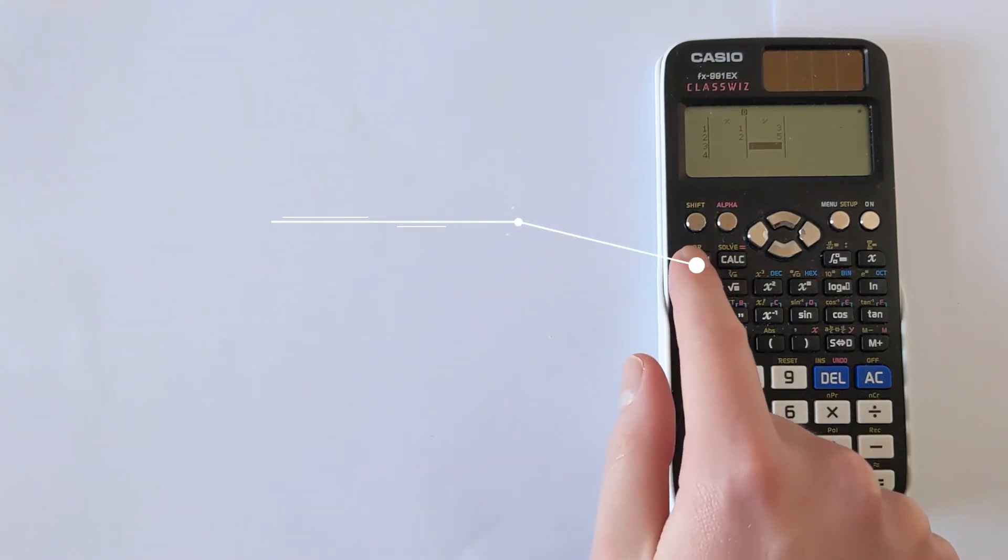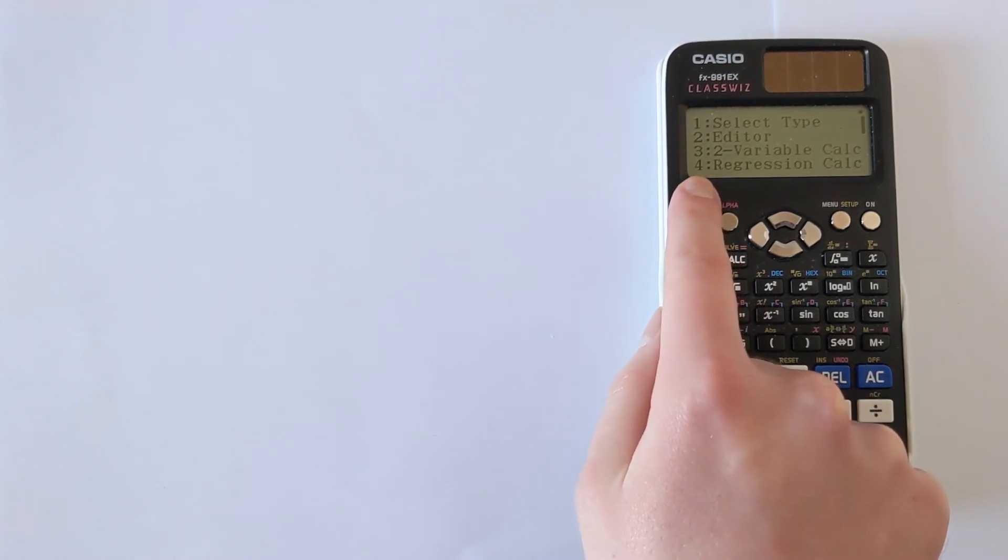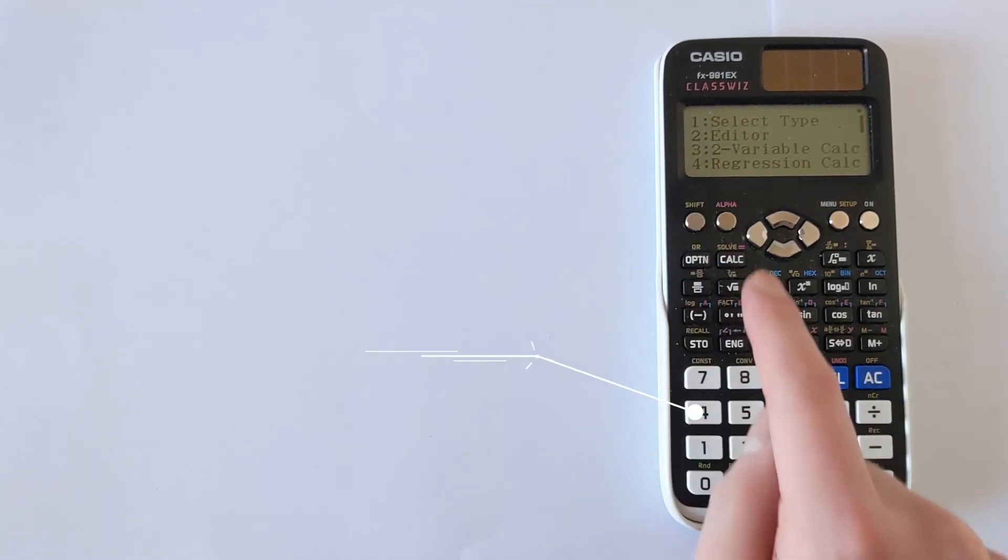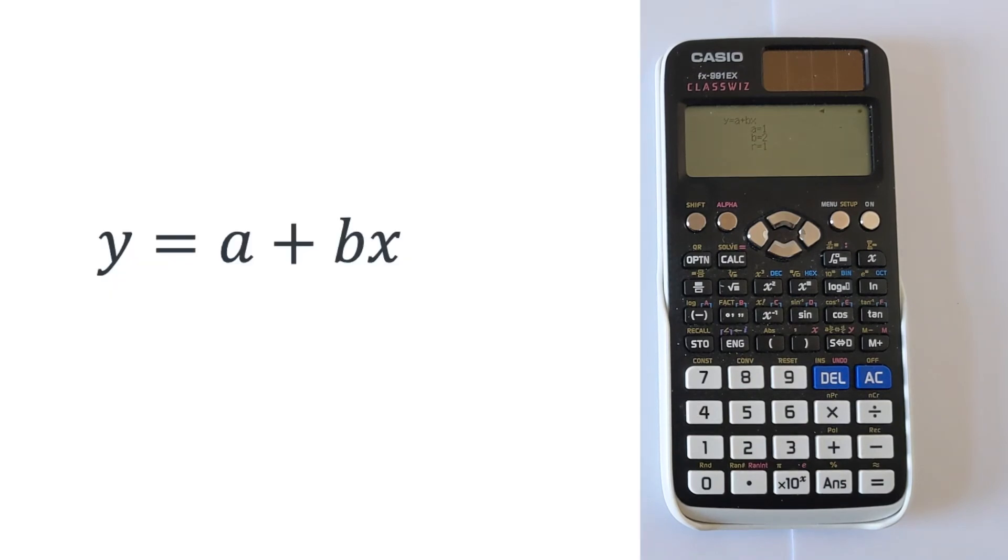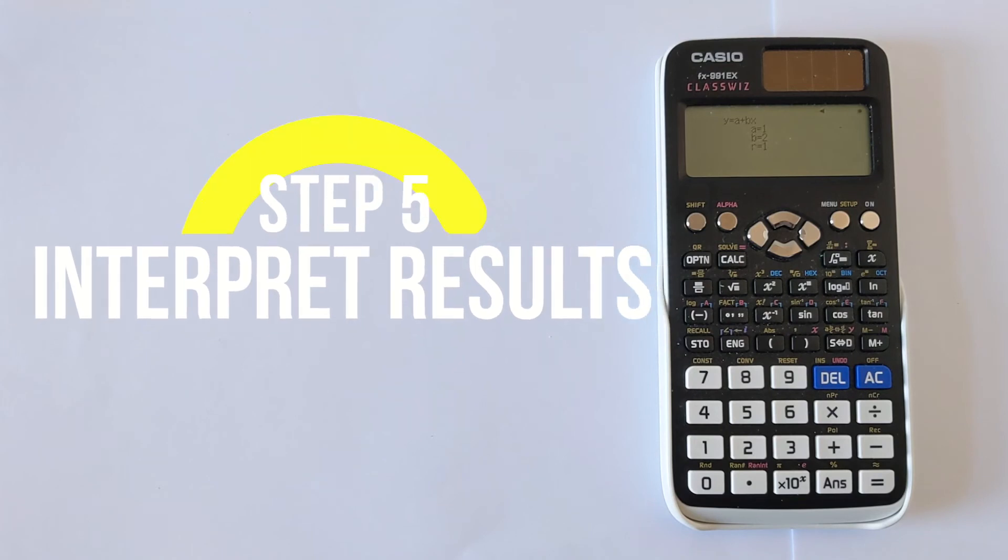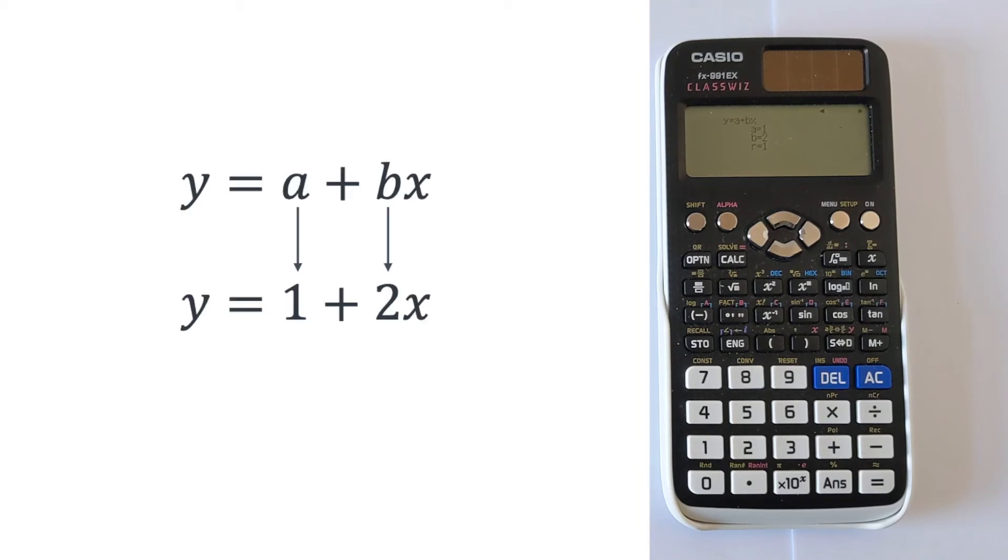So what we want to do now is press the button option. Then we want to choose regression calc. So that's option 4. And then we get presented with this here. So you've got y equals a plus bx, and you have to interpret this. So you've got a is 1, and then b is 2. So that gives you the equation y equals 1 plus 2x.